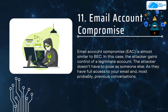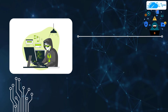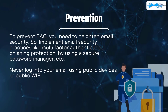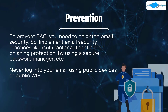Number eleven is Email Account Compromise (EAC), which is similar to BEC. Here the attacker gains control of a legitimate account — they don't need to pose as someone else since they have full access to your email and previous conversations. To prevent EAC, implement email security practices like multi-factor authentication, phishing protection, and a secure password manager. Never use public Wi-Fi or log into your email on public devices.